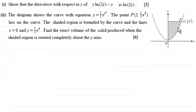And the shaded region is bounded by the curve and the lines x equals 0 and y equals a half e to the power 4. And what we've got to do is find the exact volume of the solid produced when the shaded region is rotated completely about the y axis.